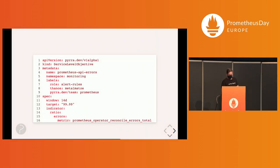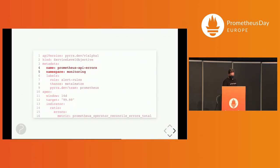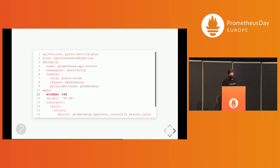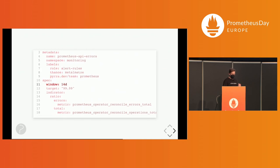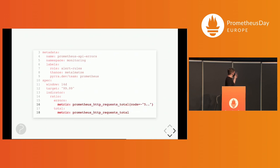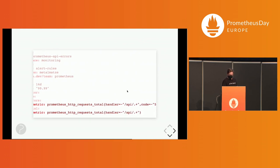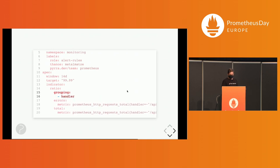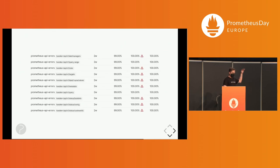So how do you create an SLO? There's a CRD. You get the namespace and name, and you can add labels. Then you specify the time window for the duration of the SLO and the target. You can say whether it's an error ratio you want to alert on, or duration or latency. You give it an error metric and a total metric. You can also use the same metric with different labels, and filter into specific APIs, for example. If you do that with a regex, you can also group by — similar to sum by in Prometheus. And with one config, you get all the different SLOs by handler.